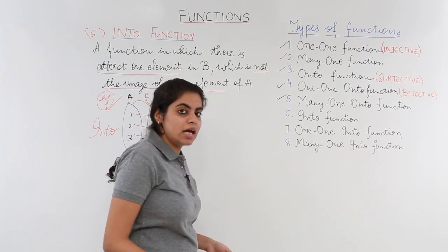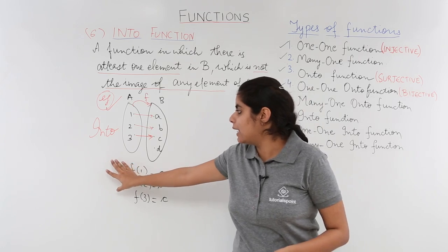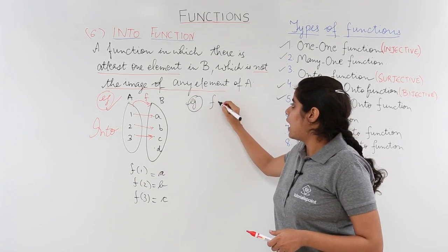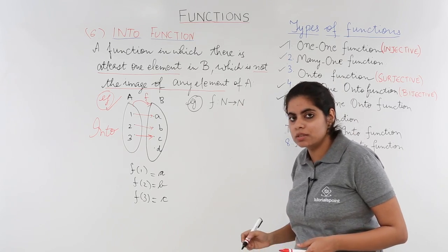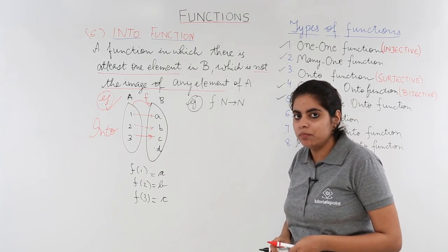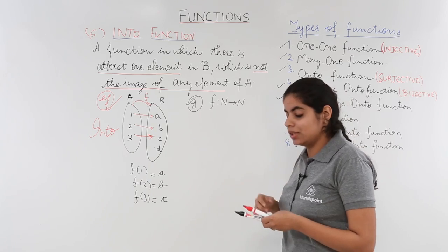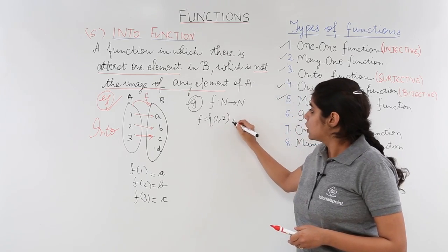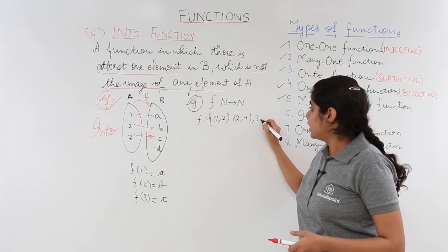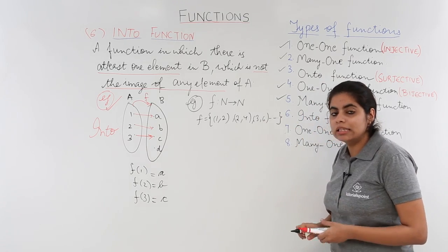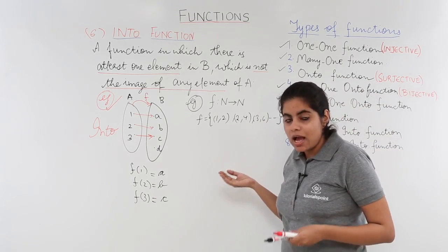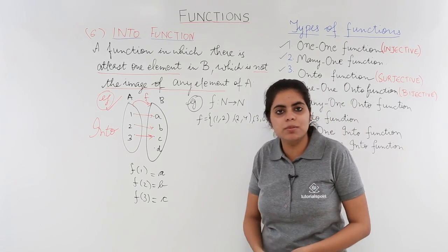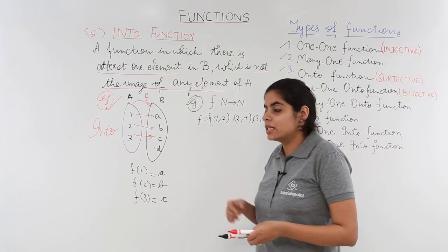Let's see another example of an into function where the example would not be an arrow diagram, but rather a question-based relation. Another example would be when a function has a mapping from natural numbers to natural numbers, and we have a doubling function — that means the function is such that 1 is related to 2, 2 is related to 4, 3 is related to 6, and so on. That means elements 1, 2, 3 have images 2, 4, 6 respectively, and this continues for all natural numbers.